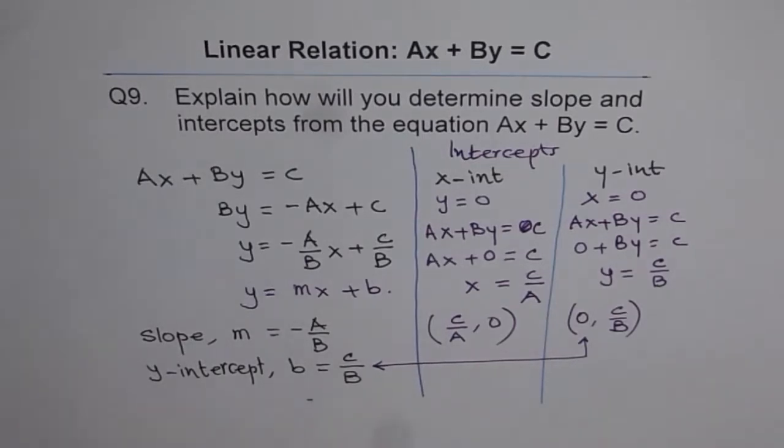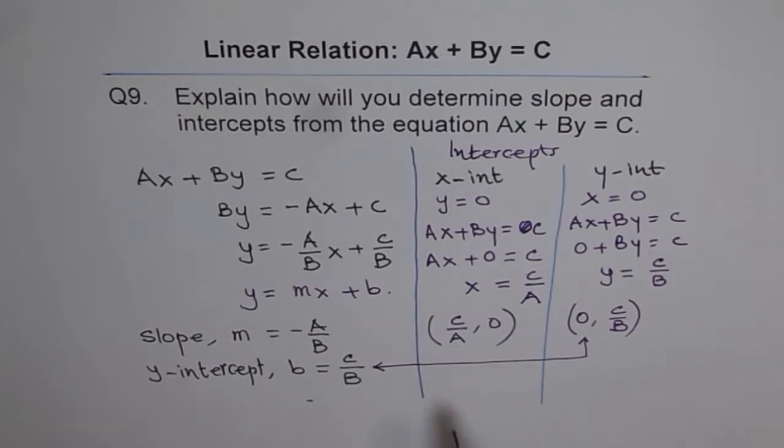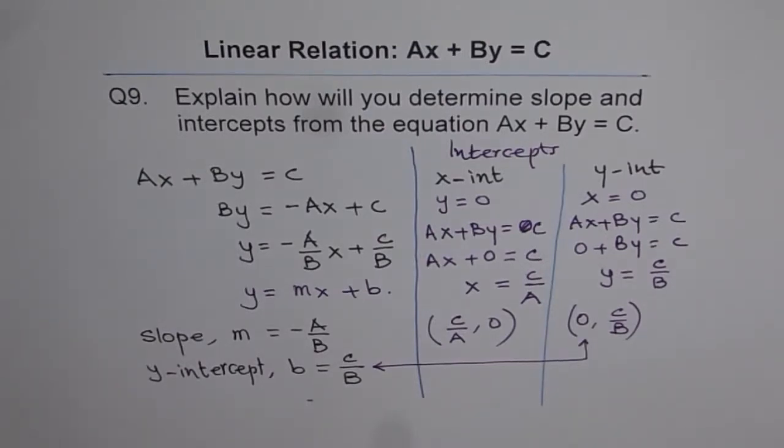So this method which I have shown you here is the method to find intercepts. And once you get intercepts, you can plot these two points and join them with a straight line, which will represent your equation of the line. So that is how you get it. Now, let me summarize it.